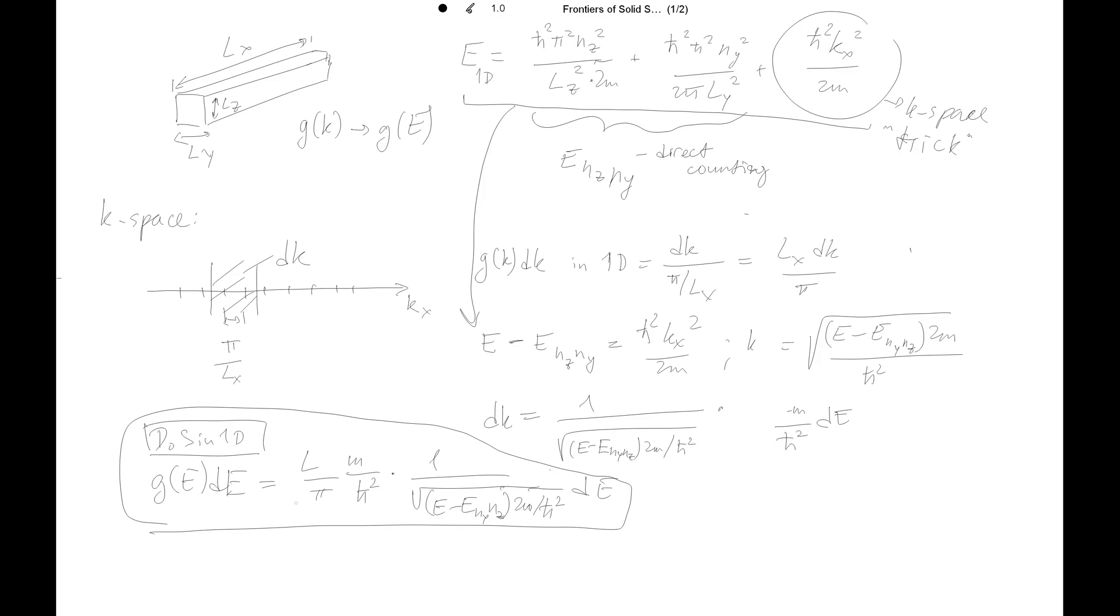And again, we can represent the density of states per unit length. For nz and ny, we normalize this by L, so per unit length.